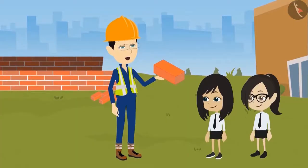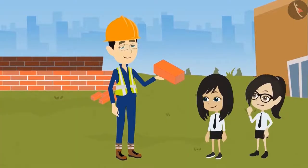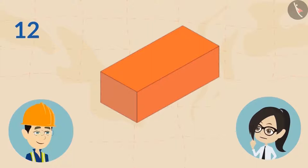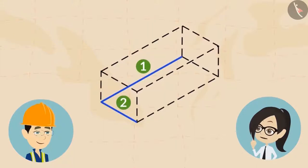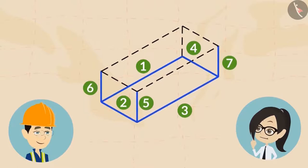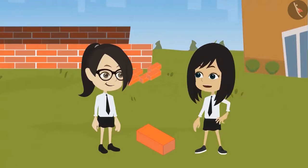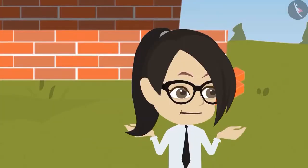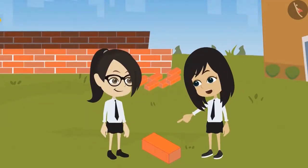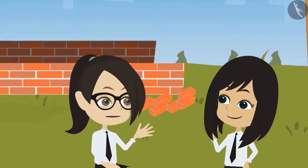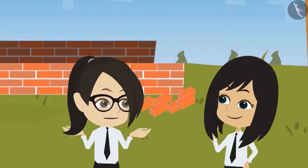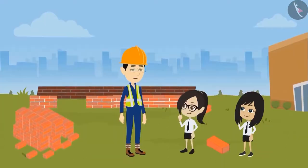Now let's count the edges of this brick. It has 12 edges — one, two, three, four, five, six, seven, eight, nine, ten, eleven, twelve. One point to be noted: all the faces and edges are straight.